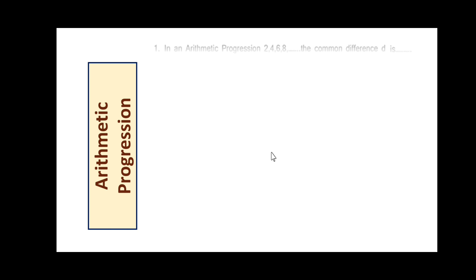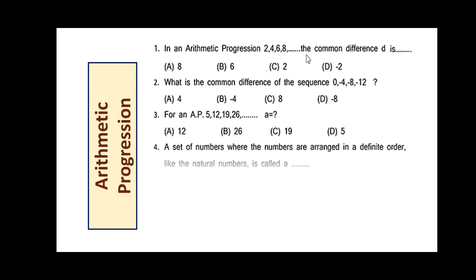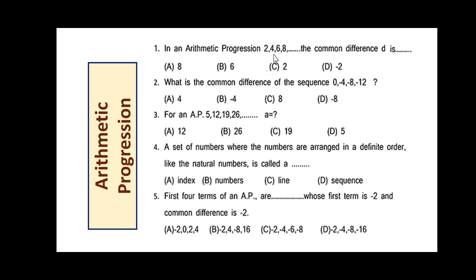We will now consider the third topic: arithmetic progression. In an AP 2, 4, 6, 8, and so on, the common difference D is found by taking the difference between adjacent terms. 4 - 2 = 2 and 6 - 4 = 2, so the common difference is 2.